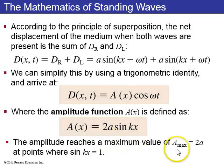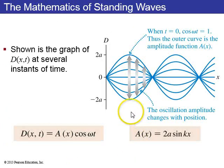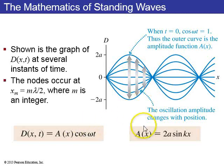So this amplitude reaches a maximum in any places where sine kx equals 1. And here's what it looks like. This is shown in the graph of D of x and t at several instants of time, showing it going up and down at the antinodes and not moving at all at the nodes. And here's the equations which describe it. The nodes occur at positions that are some integer multiple of lambda over 2.